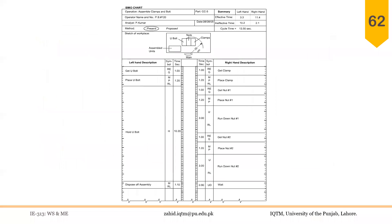These therbligs are used to draw the CIMO chart. Apart from the details at the top, it is also recommended to draw a rough workplace layout of the workstation where the operation is being performed. On the left side we have the left-hand description and on the right side the right-hand description, just like the two-handed chart.